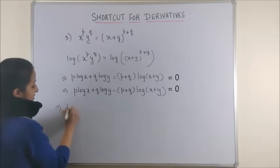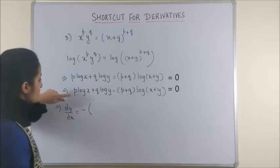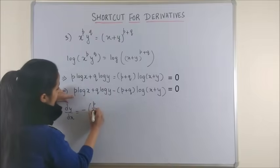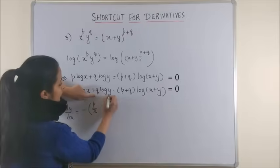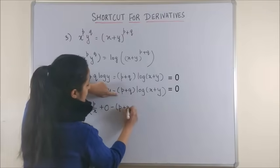Next, let's start differentiating. Your numerator will have minus of, you differentiate with respect to x. So, this becomes p by x plus q and log y both are constants, so it's a 0. Minus p plus q is a constant.